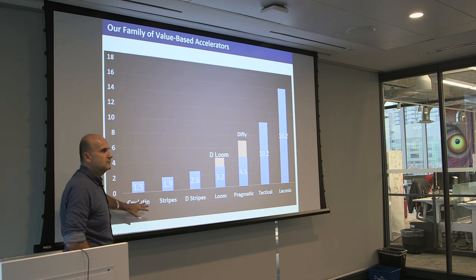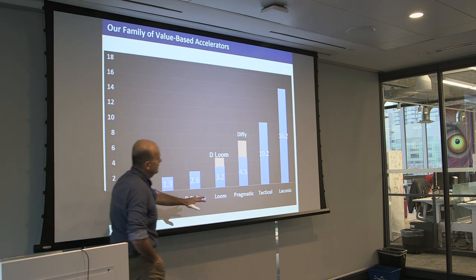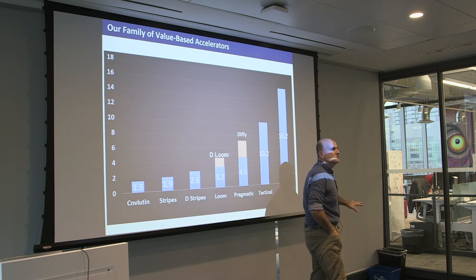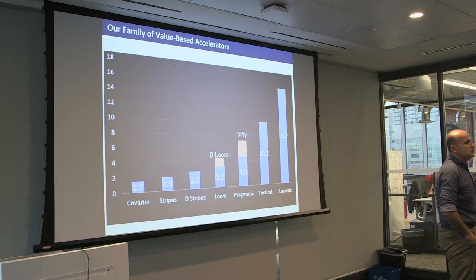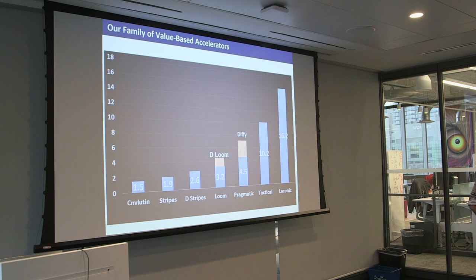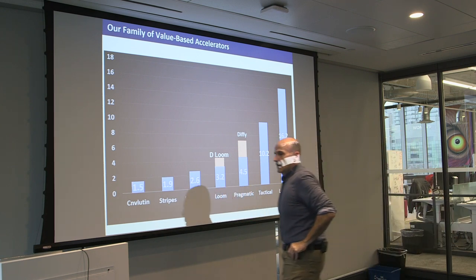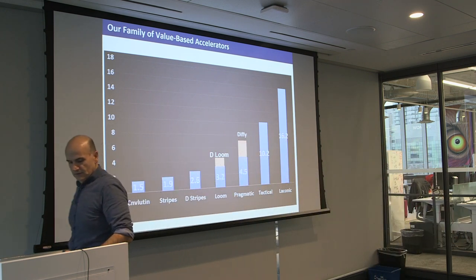This is a historical figure — 2013–14. We started with zero skipping. This is our latest and greatest work. Most of this is published; all of it is on arXiv. Laconic is a machine that takes advantage of zero bits for both the activations and weight side. The numbers shown are indicative of what performance I give you versus a very well-optimized, value-agnostic accelerator that does everything you tell it and tries to reduce communication.